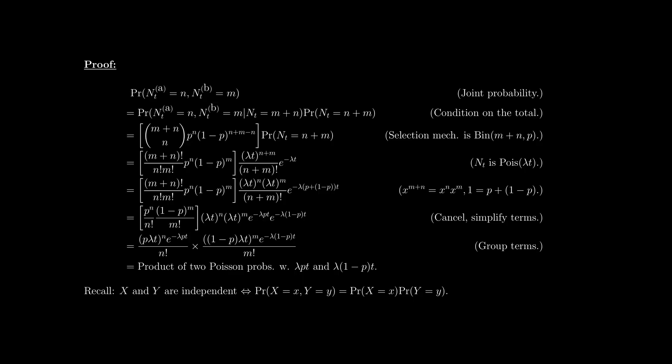The proof of this statement involves only minor mathematical manipulation — it's not too complicated. The proof starts with the joint probability of the state variables N_T^A and N_T^B. The theorem claims that N_T^A and N_T^B will be independent Poisson processes with particular rate parameter specifications. The reason we start with the joint probability is that if those events are independent, we must end up with the product of two marginals, and those must be Poisson probabilities with the particular rate parameter specifications. Recall from probability: two random variables X and Y are independent if and only if their joint probability is the product of their marginals. We want to end up with the product of two Poisson probabilities.